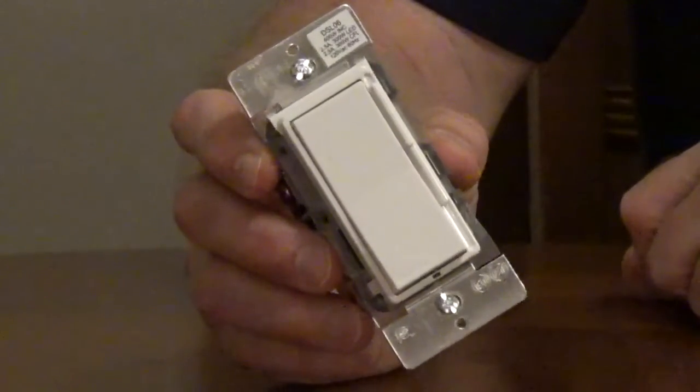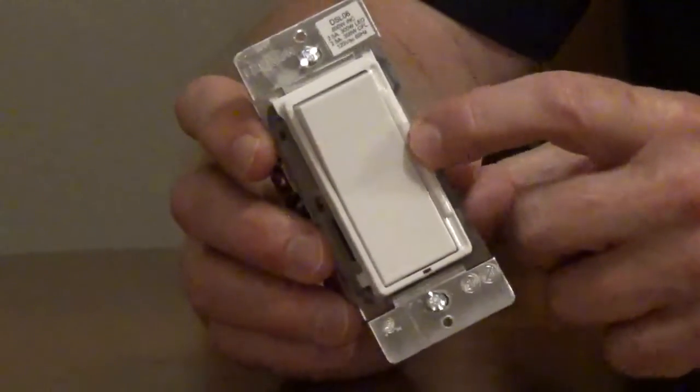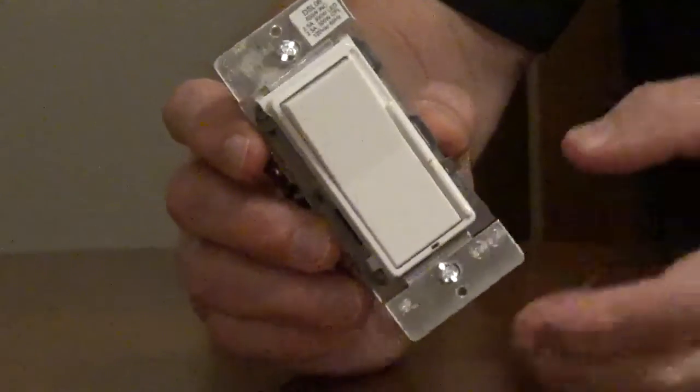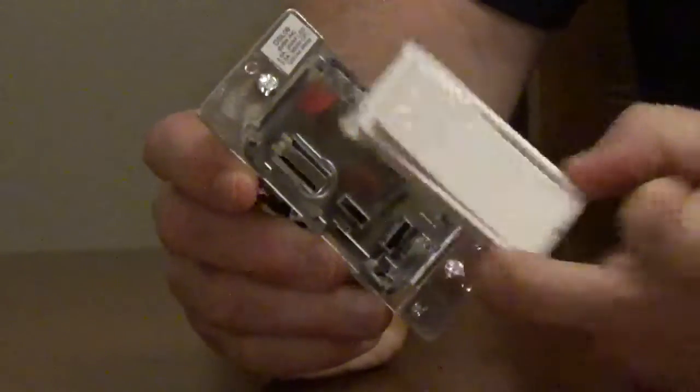This is the TSL-06. Turn off the switch and move your slide bar all the way to the lowest setting. With this switch, you're going to have to squeeze the bottom and remove the cover plate.